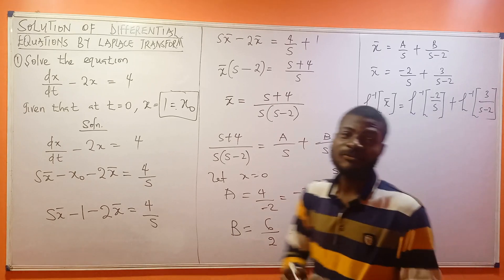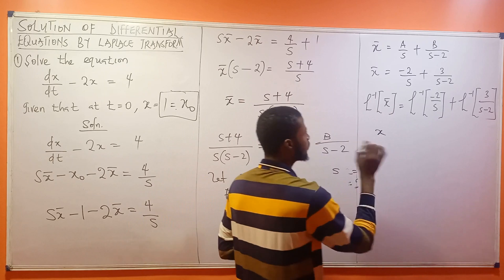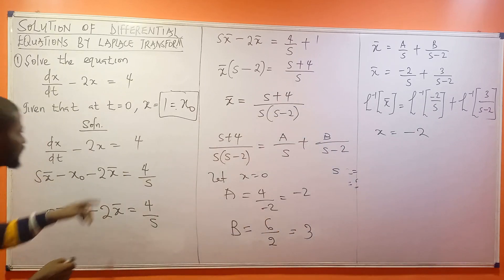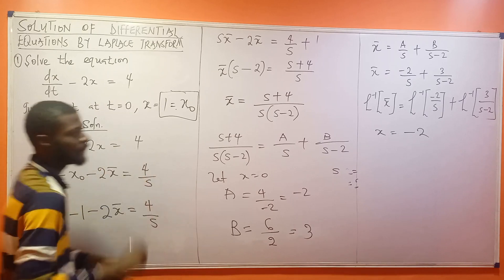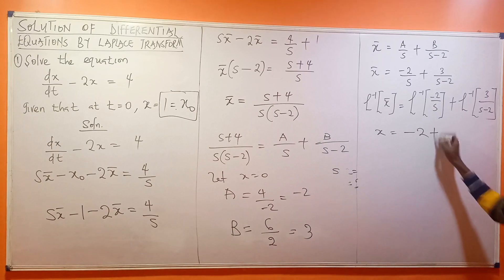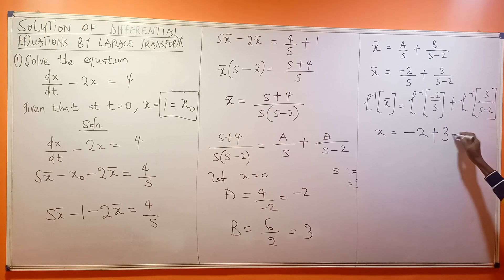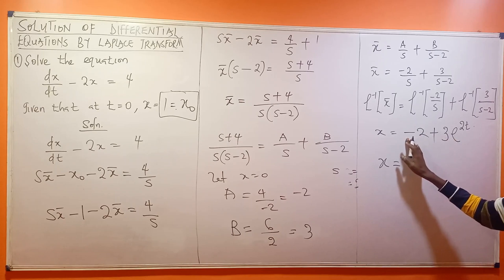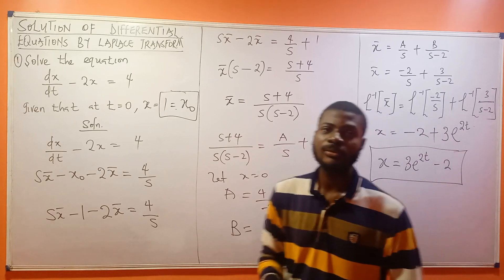Please remember to watch the full video on inverse Laplace transforms. The inverse Laplace of S bar gives S. The inverse Laplace of minus 2 over S is just minus 2, since the Laplace of a constant 4 is 4 over S. Then the inverse Laplace of 3 over S minus 2 gives 3 e to the power of 2T. So the final answer is S equals 3e^(2T) minus 2. Thank you for watching.